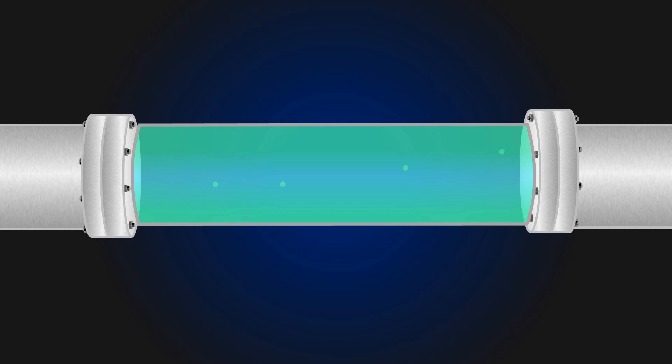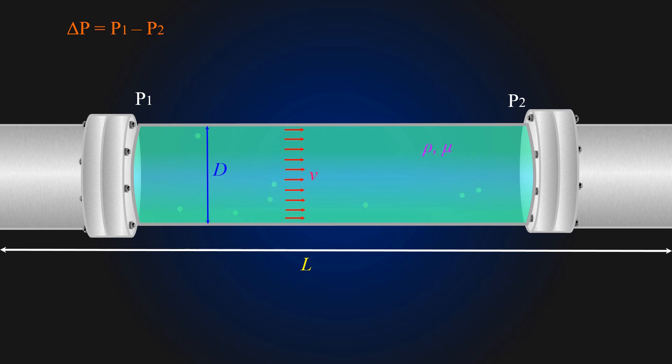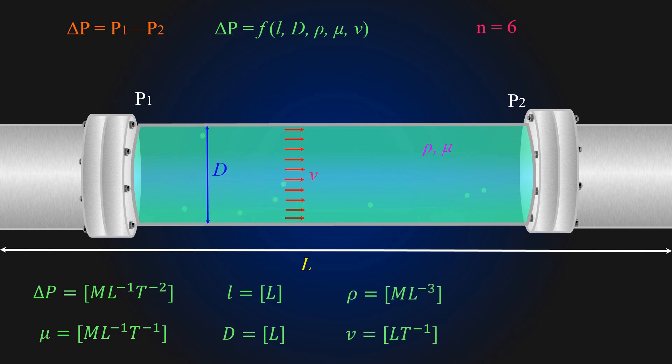In a pipe flow, we want to determine the pressure drop across two points P1 and P2 represented as delta P, which depends on the pipe length, diameter, fluid velocity, density and dynamic viscosity. So the number of parameters n is set to 6. In step two, we write these six parameters in terms of their primary dimensions. It can be seen only three primary dimensions, namely mass, length and time. So the number of primary parameters j is set to 3.